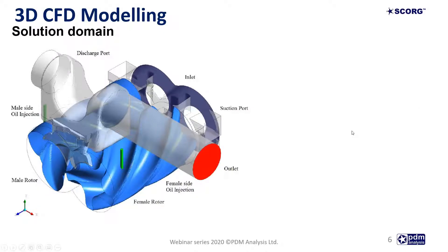The CFD modeling consists of a solution domain representing the problem being solved. For compressors or expanders, this includes different domains: a suction port, a discharge port, and in between them the main deforming chamber which is the rotor domain. Because these are positive displacement machines, the rotor domain deforms with time and the envelope volume between the lobes of the rotor squeezes to decrease its volume. Depending on the machine design, you can also have liquid injections such as oil or liquid refrigerants.